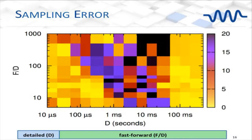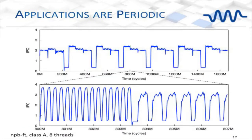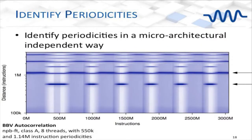It turns out that applications are periodic. This application periodicity, when doing this type of fast-forwarding, matters. This is NAS Parallel Benchmarks using OpenMP — FT class A input with eight threads — running an FFT on a multi-core cell phone. There are three phases we can see. On the top we have coarse-grained phases. You can also look at the periodicity — how often the instructions repeat. We can see that this application has a periodicity of 550,000 instructions and 1.14 million instructions.